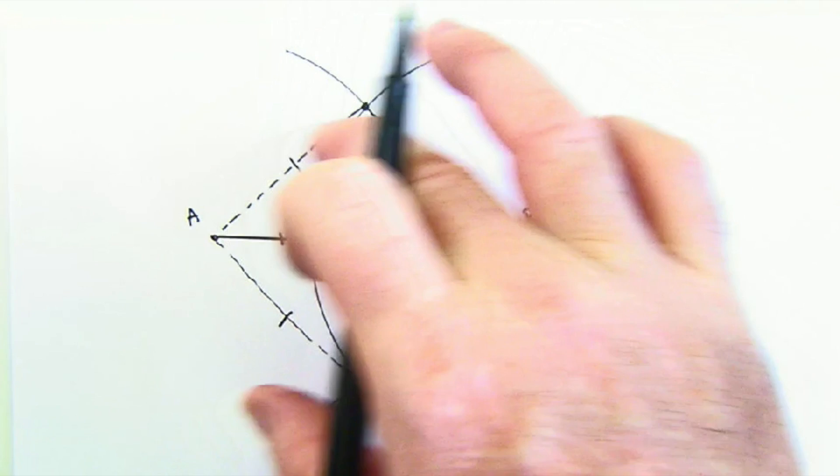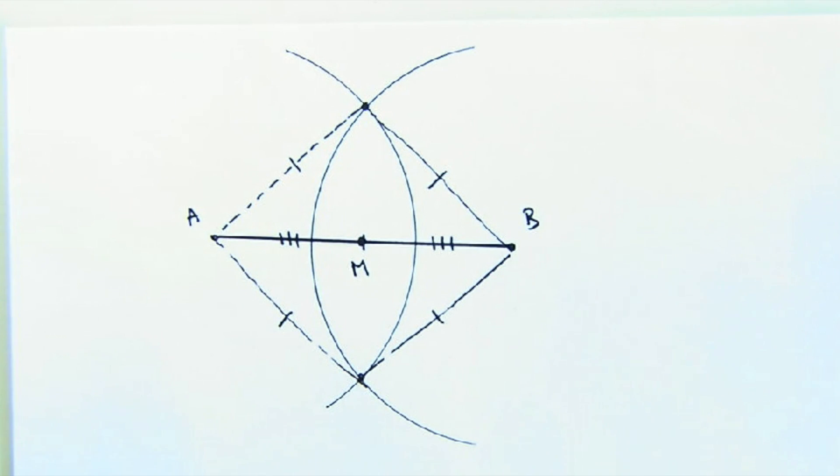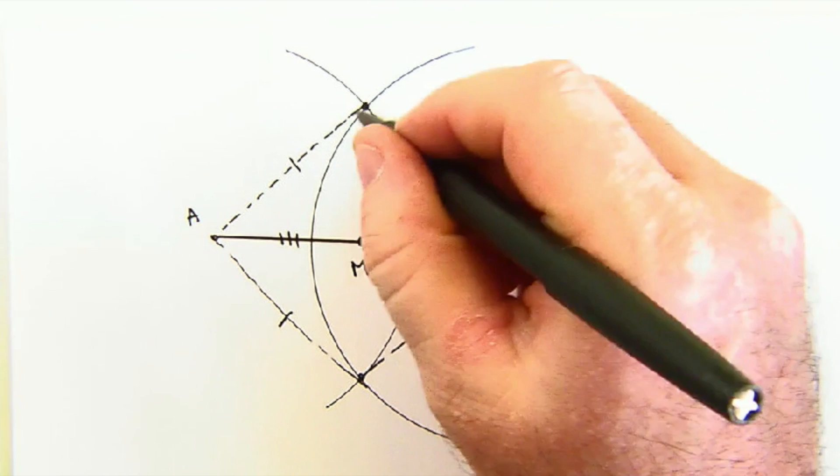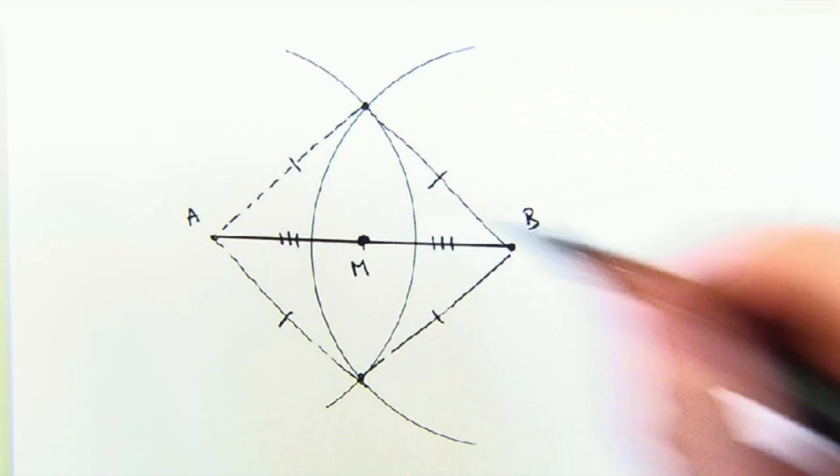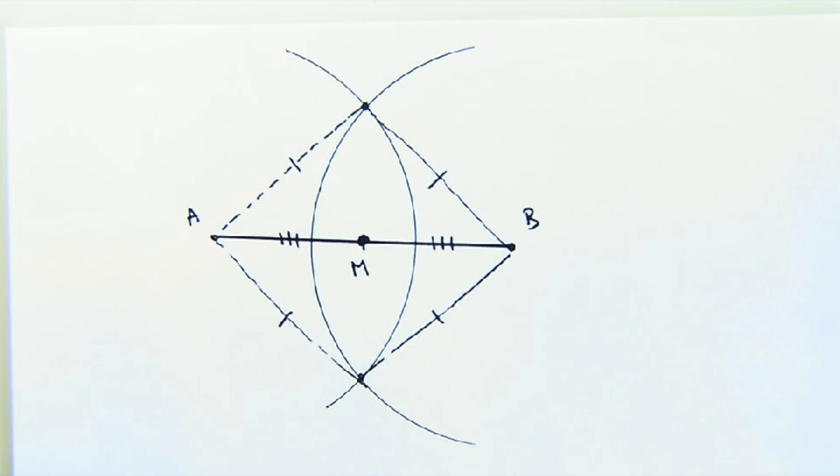The shape that's actually formed is called a rhombus, four equal sides. And by doing so, it creates the perfect intersections to form the midpoint.